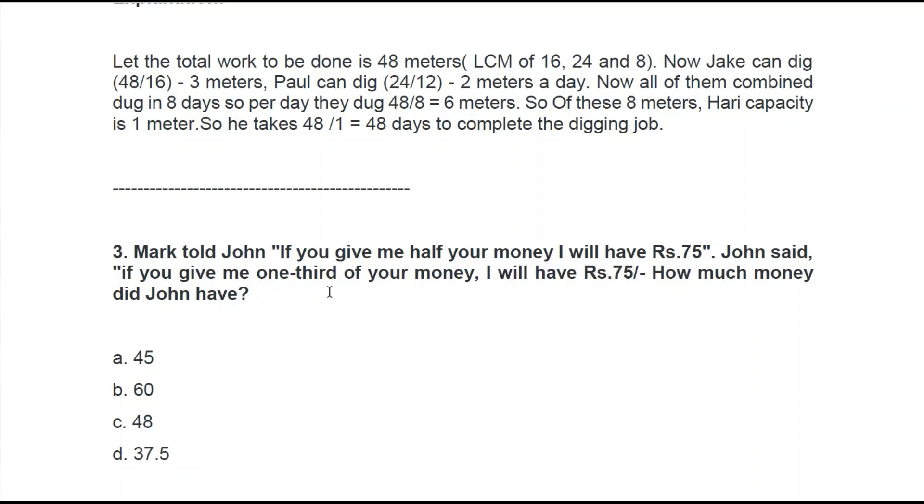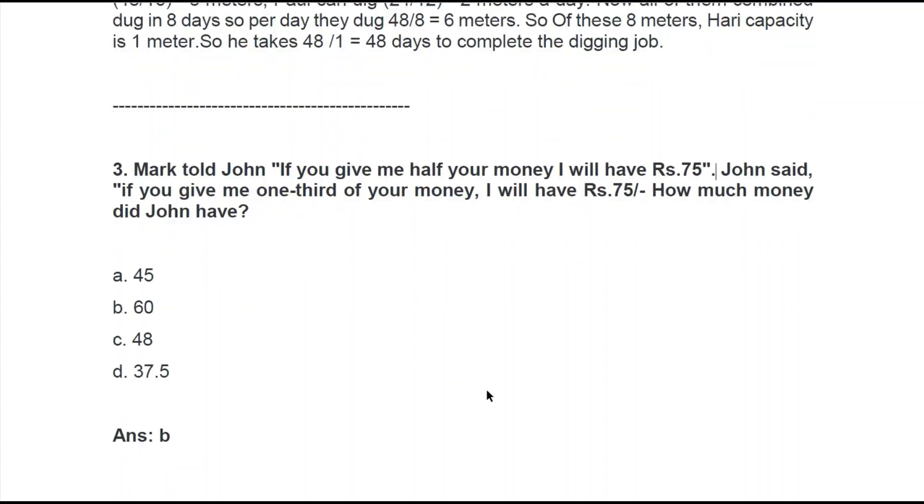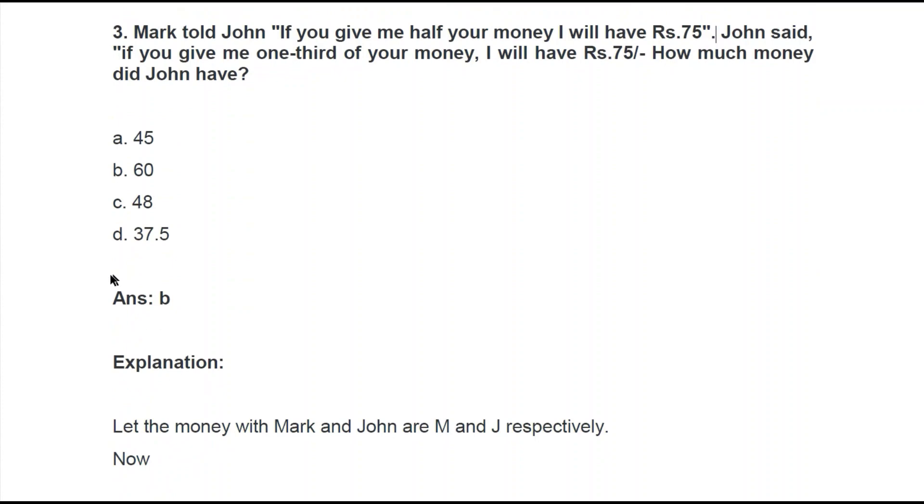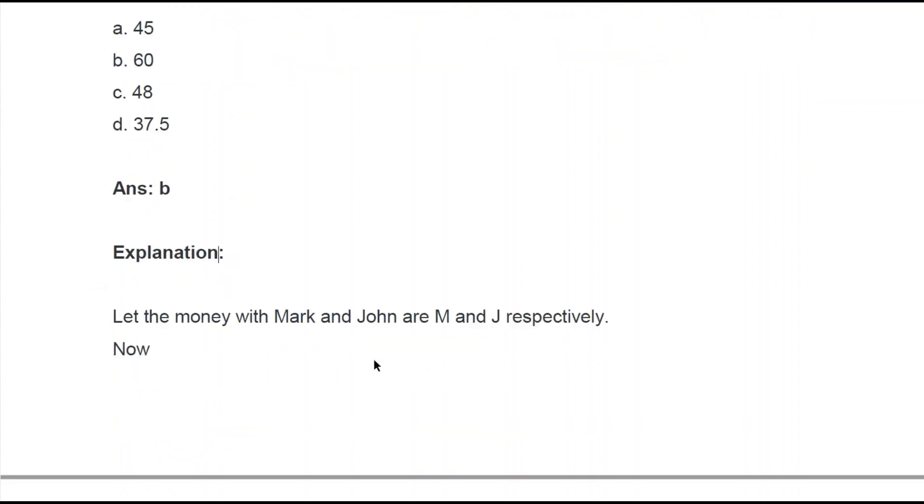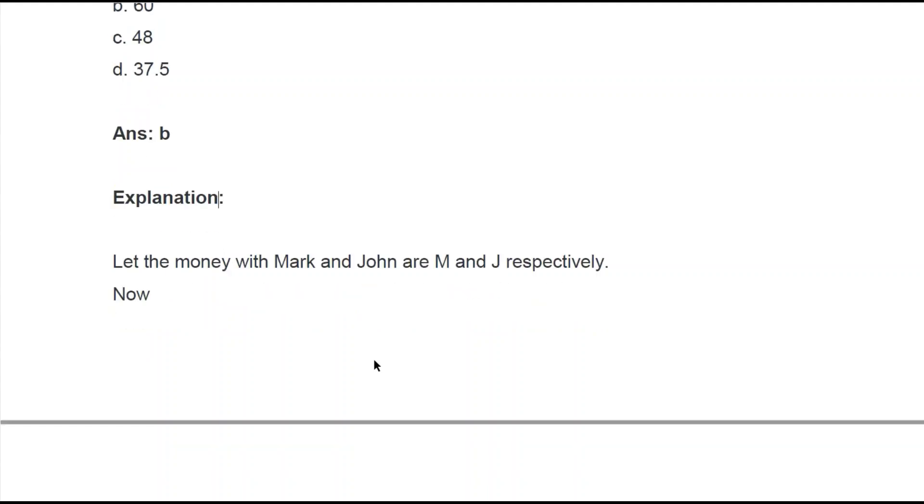So here if we take Mark's money as M and John's money as J and then form a linear equation by the given conditions, then I think we can solve the problem very easily. Let's see how they have solved it. Well, they have said that the answer is B. Now let's see the explanation.